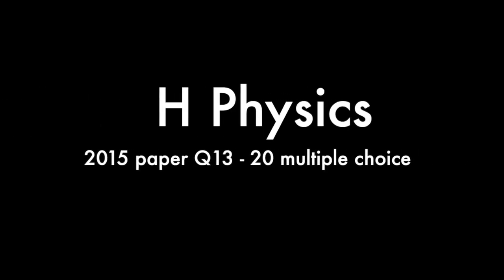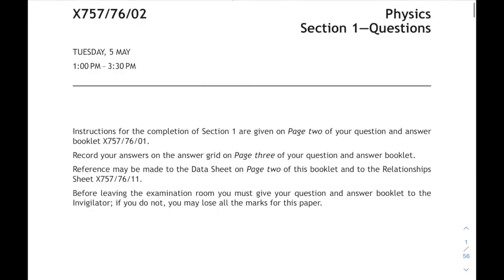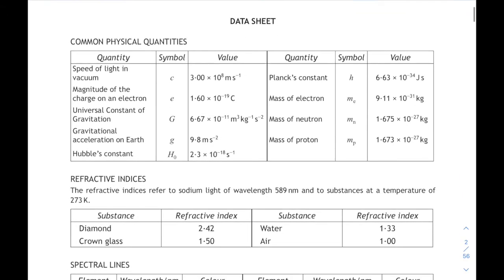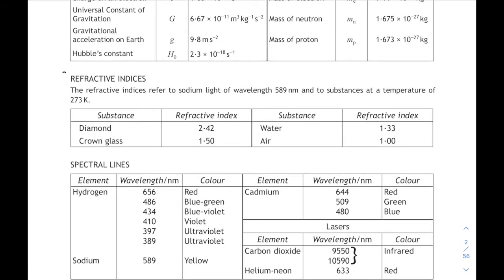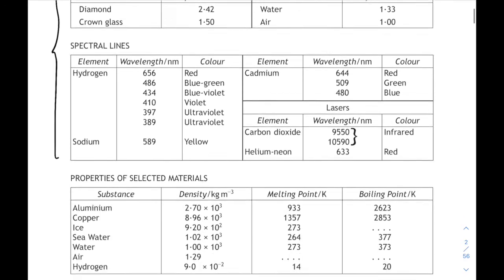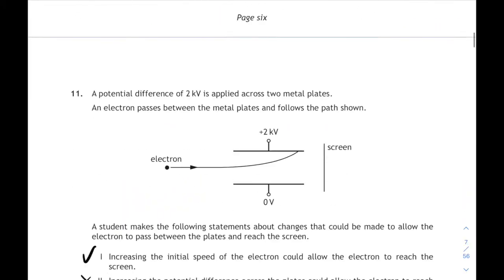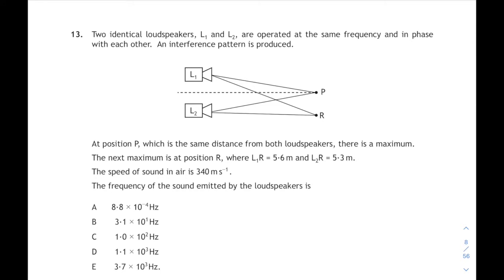Okay, hello everybody, it's time for the second half of the 2015 paper multiple choice section, questions 13 to 20. So 2015, part 2. Don't forget your data sheet contains all the information, the numbers that you might require, and it's usually refractive index and spectral lines in the second half of the paper that will be most useful to you. We got all the way to question 12 in part 1, so we're going to start at question 13 on interference of waves.